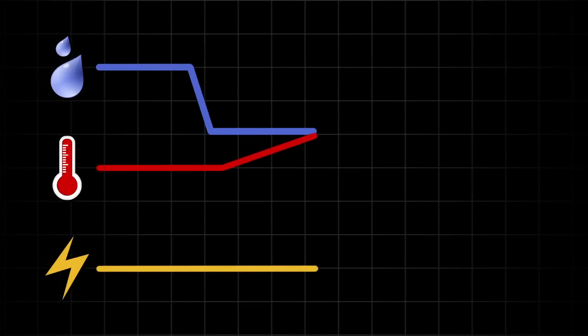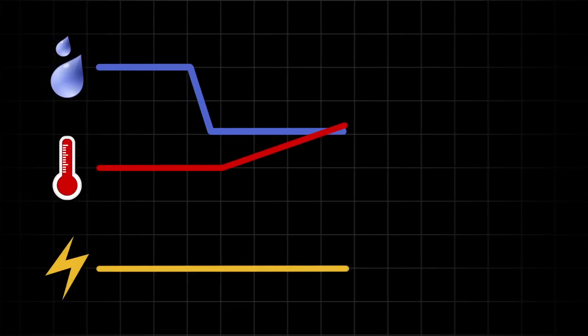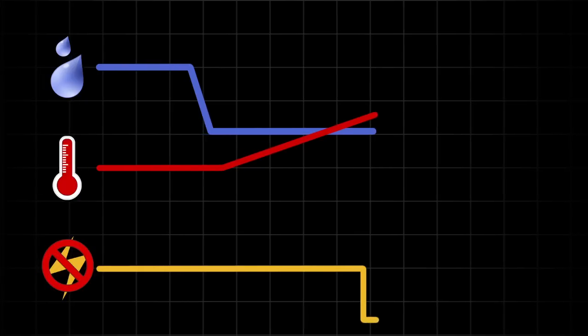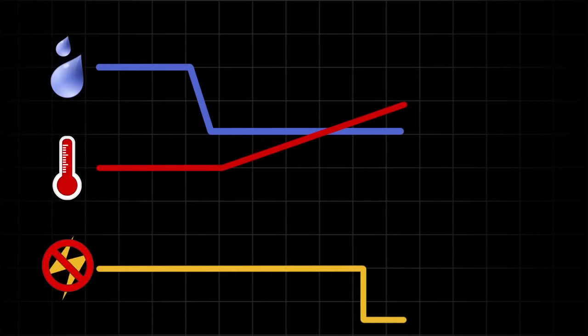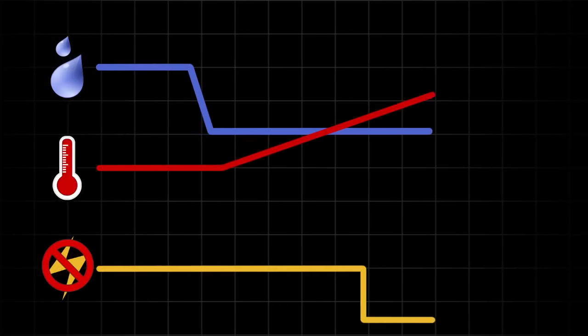When the thermal trip senses a temperature above 50 degrees it will switch off the power. This will cause the showering temperature to reach in excess of 70 degrees.